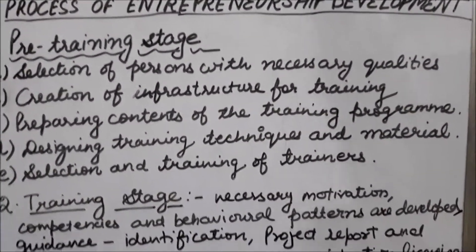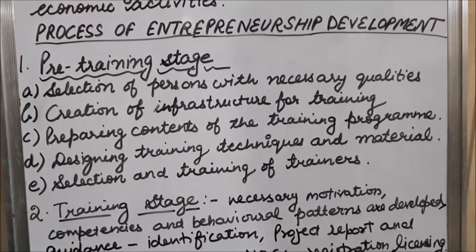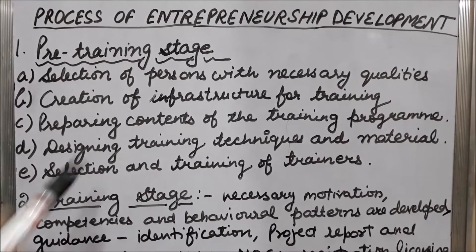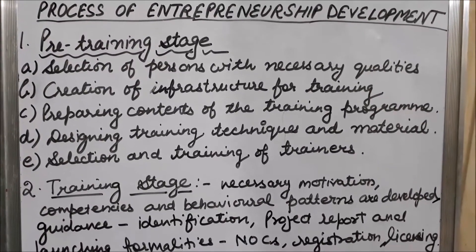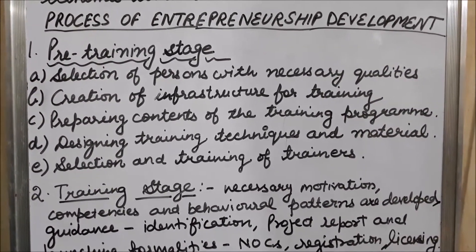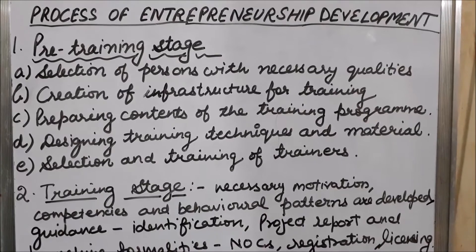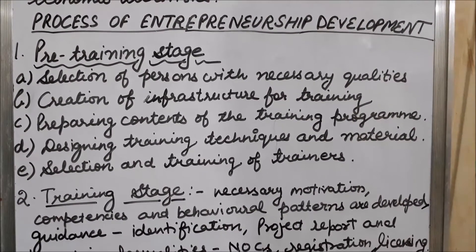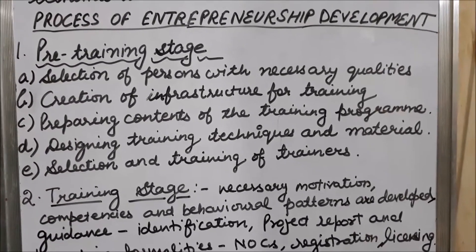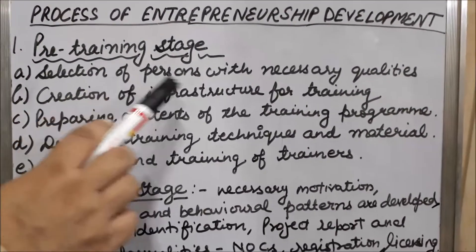Entrepreneurship development, which I discussed in my last class also, means improvement in the knowledge and skills of entrepreneurs through various training and classroom programs. The entrepreneurship development process is divided into three stages. The first stage is the pre-training stage. In this stage, there are a large number of people who want entrepreneurship development, but before giving training we have to check their qualities — whether these people have the potential to become entrepreneurs or not. The first step is selection of persons with necessary qualities.